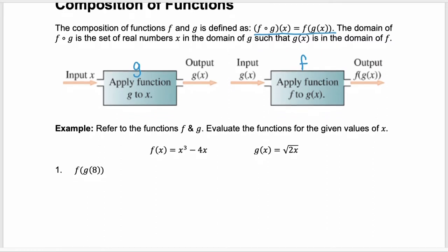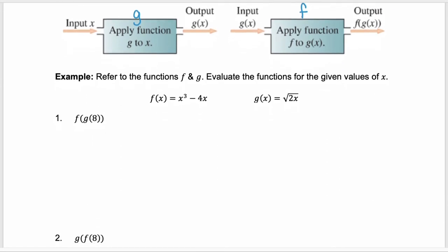Let's look at a couple of examples. Here we have two functions, f of x and g of x. Example one, we're finding f of g of eight. Remember you start with the innermost function, g of eight here. So evaluate g of eight. We're substituting eight in for x in function g. So that is the square root of two times eight, the square root of 16, which is equal to four.